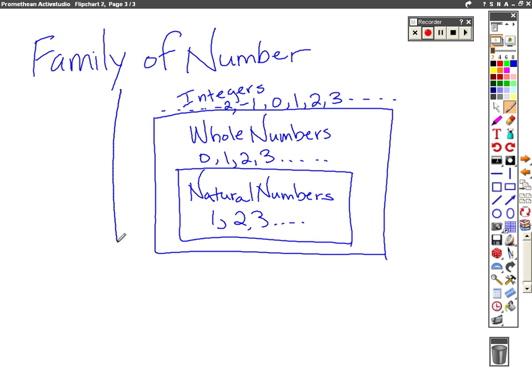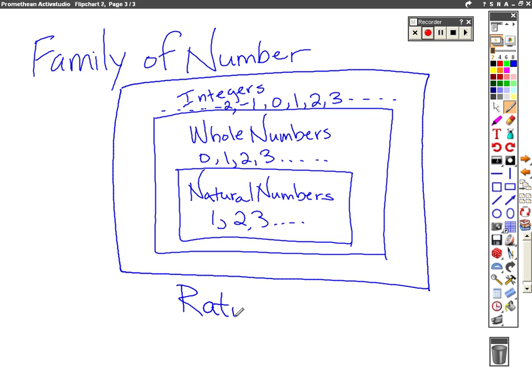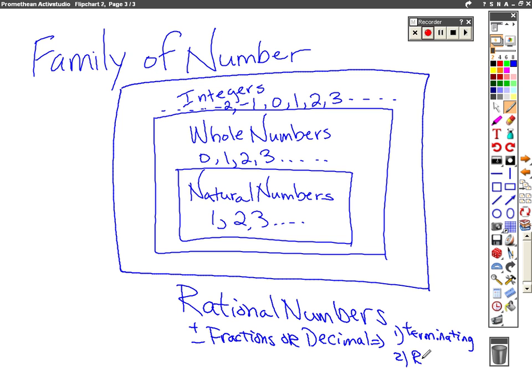All of these are what we call rational numbers. Outside of that. Now, rational numbers, though, include all of these and numbers that are capable of being written into fraction form or decimal form. So, positive and negative fractions, any numbers that can be written as a fraction. Or, if it's a decimal, then it has to be either terminating or it has to be repeating.